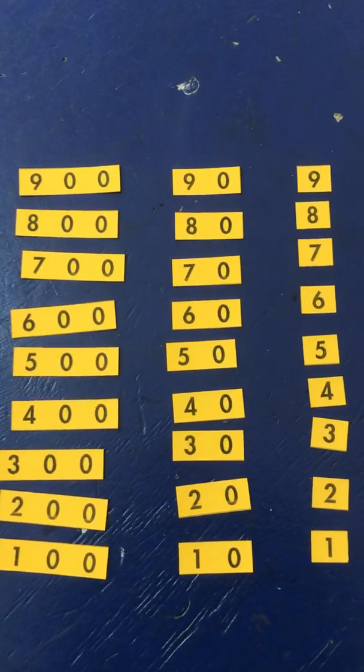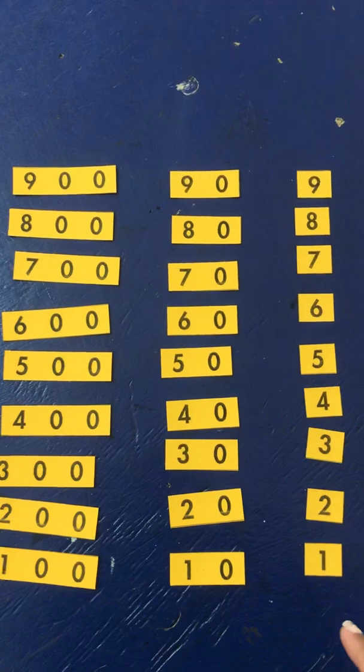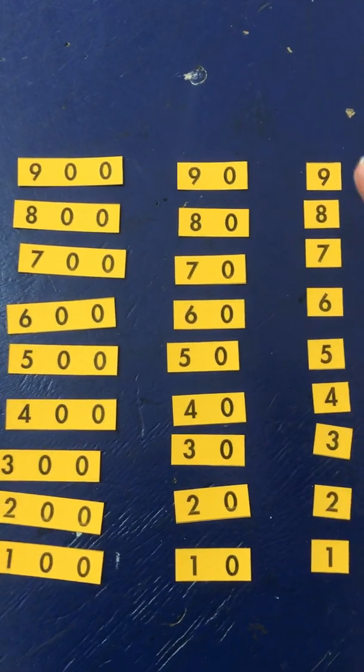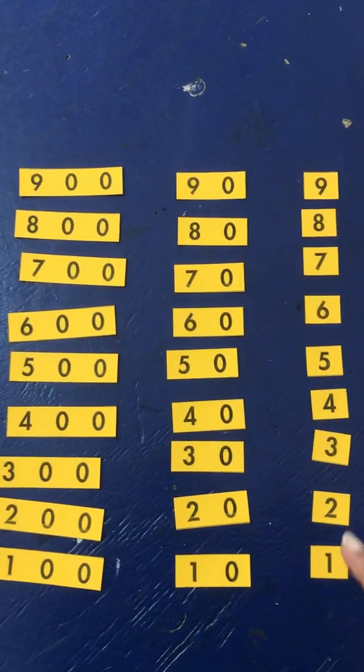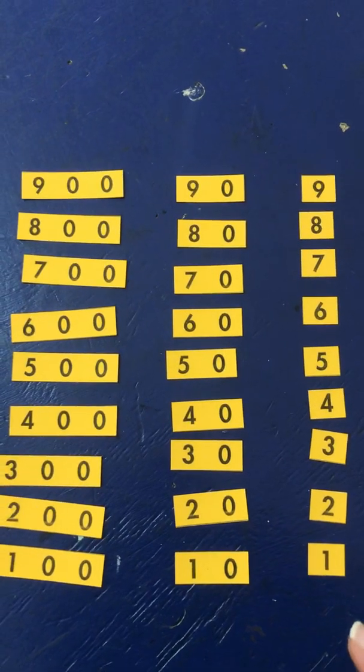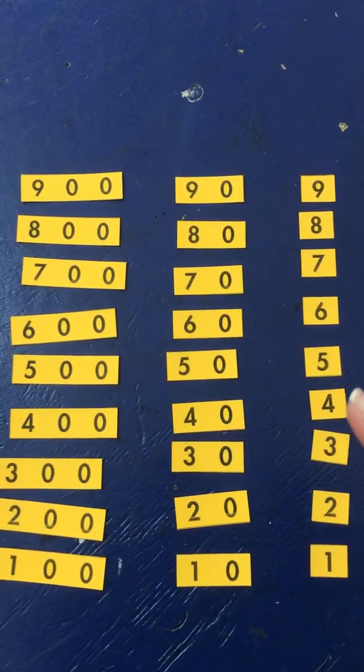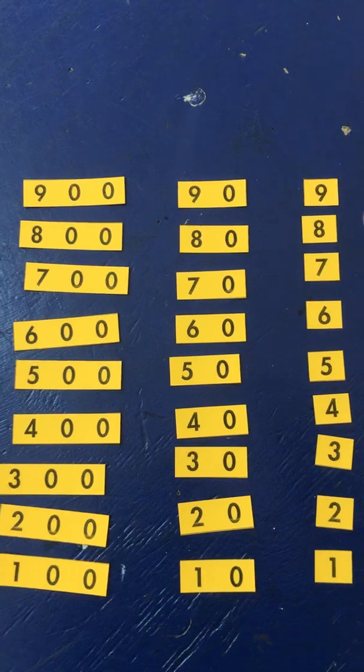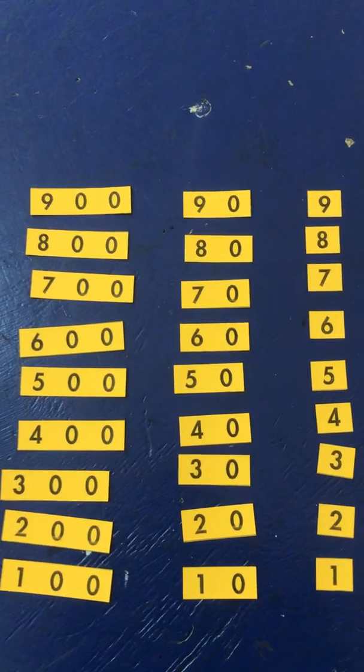Start with one at the bottom to nine at the top, so it's going to go one, two, three, four, five, six, seven, eight, nine.